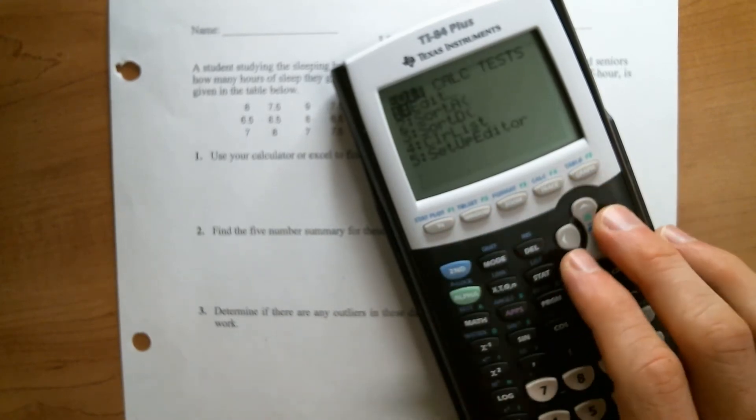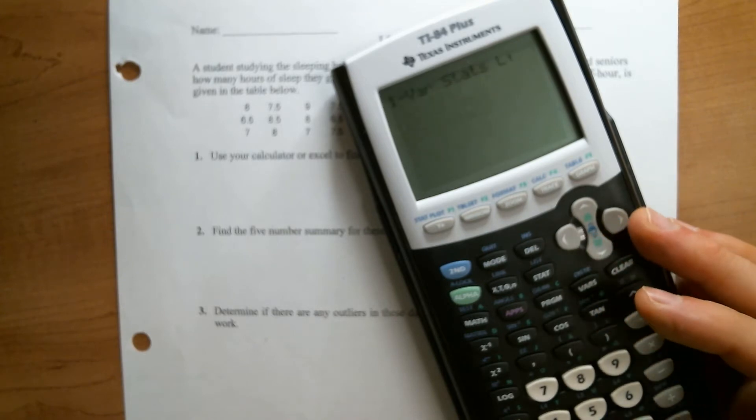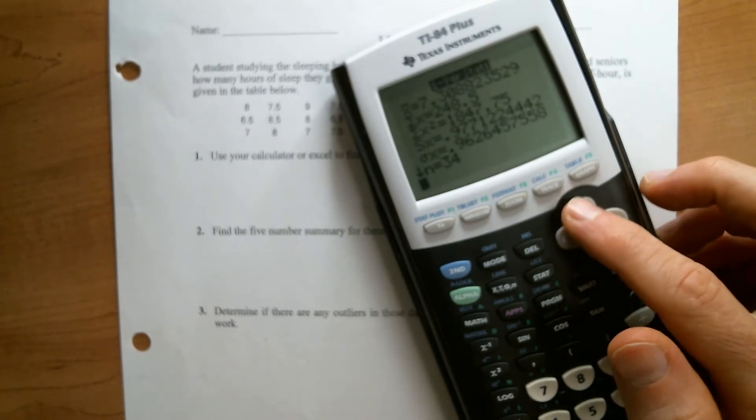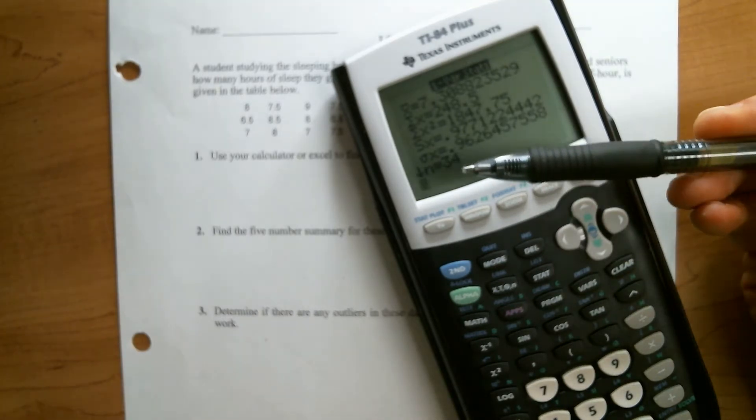Once it's in L1, I can go to stat, calc, one variable stats. It's in list one there. And then from this output, s of x, which is the fourth one down, is your sample standard deviation.